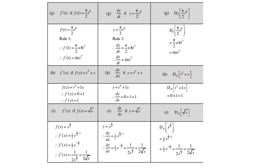For example g, we have pi over 2 times t to the power of 8. Here t is the variable, so pi over 2 is the coefficient. Therefore the derivative is 8 times pi over 2, which is 4 pi, or you can write it as 4 pi over 2 times 7 — use your calculator to get the answer. For example h, we have t squared plus x. Remember, x is the variable, so t serves as a constant. Therefore, the derivative of t squared is 0, and the derivative of x is 1. For example i, if you have a square root, get rid of it by writing it as x to the power of one-half. Then one-half times 1 is one-half, and one-half minus 1 is negative one-half.